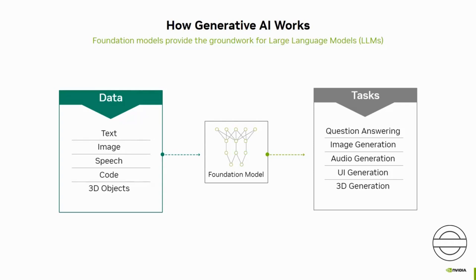Unlabeled data is abundant and diverse, and can be obtained from various sources, such as the Internet, social media platforms, or proprietary datasets. A foundation model trained on text data can be used to solve problems related to natural language processing, such as question answering, information extraction, and more. The possibilities for what a foundation model can generate are endless, and depend on the creativity and ingenuity of the users who apply them to different problems and domains.